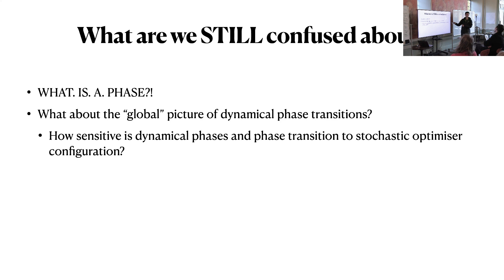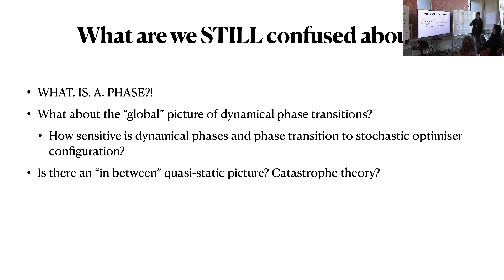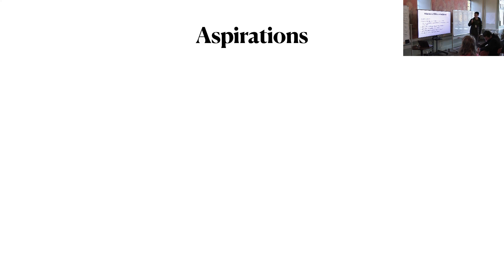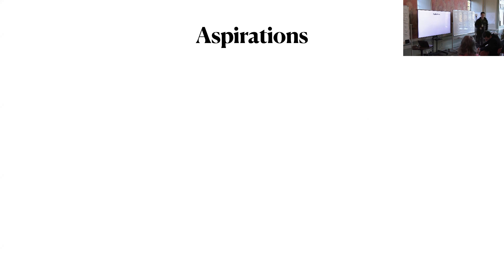Other open problems: we only care about local dynamics — what about global dynamics? Is SGD sensitive to the precise configuration of the stochastic optimizer? You have Bayesian theory that doesn't care about dynamical things, and SGD that cares maximally about moment-to-moment evolution. Maybe we should care more about phase transitions than phases themselves. Can we detect them in larger systems? Many other questions. That's it, thank you.